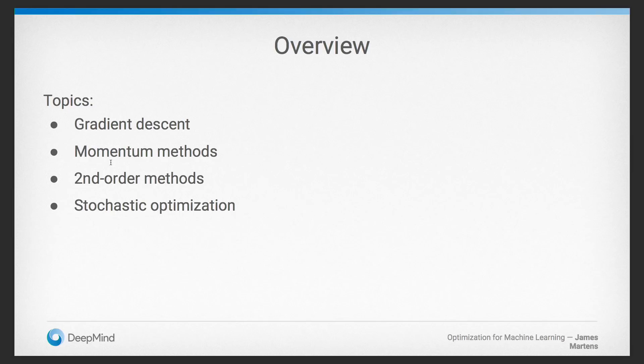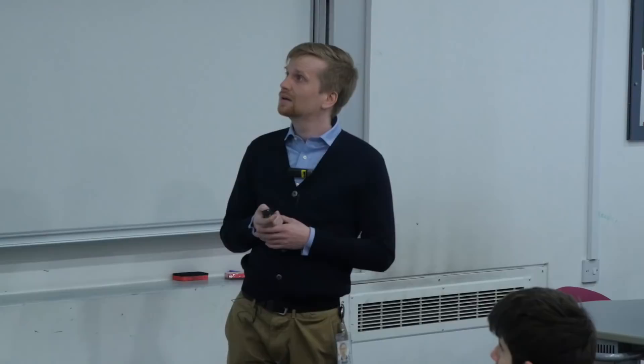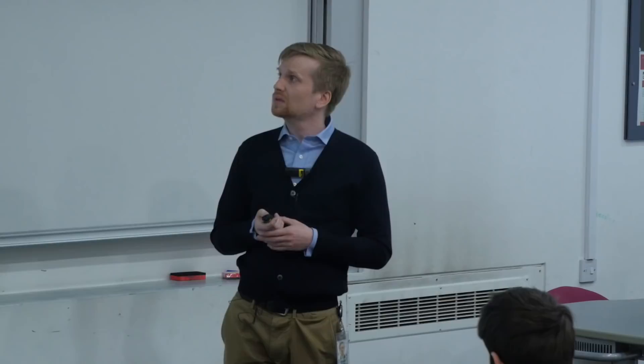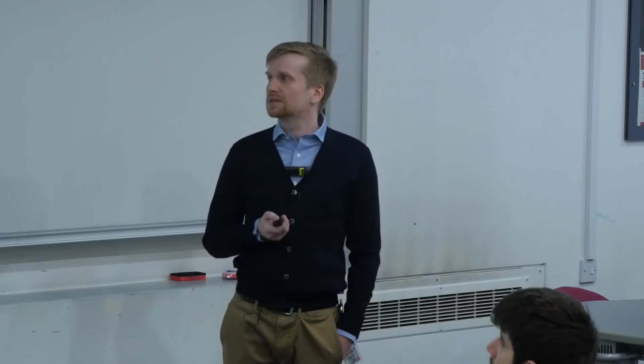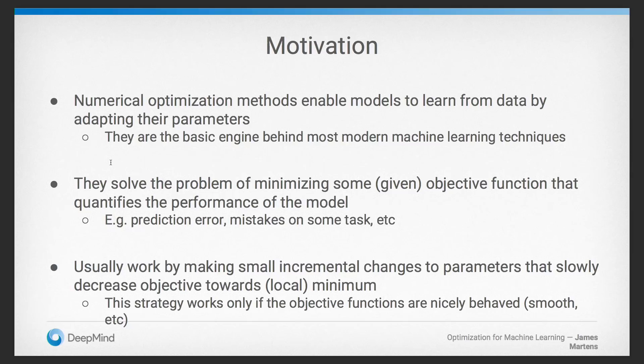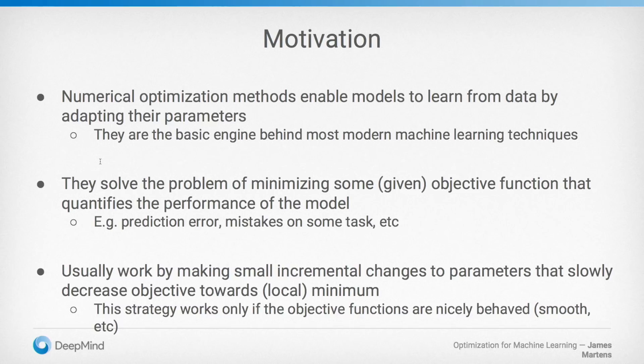Numerical optimization methods are the methods that enable all modern machine learning techniques to work, to adapt their parameters to the problem at hand. In particular, this is the engine behind deep learning. The idea is that you phrase your problem as a minimization of some objective function that quantifies the performance of the model — for example, a prediction error. These methods work by making small incremental changes to the parameters over time to decrease the objective function towards a local minimum. This strategy works because the objectives are well chosen — they're smooth, nicely behaved — and hopefully the local minima are actually good.